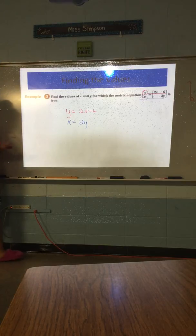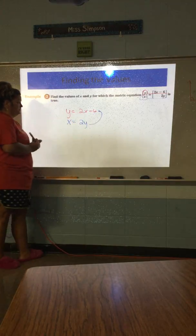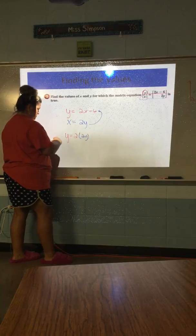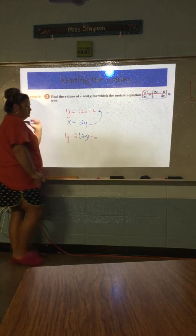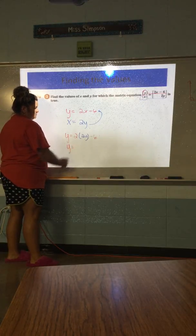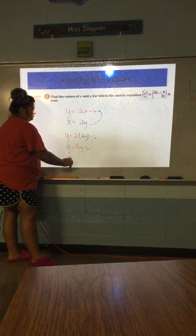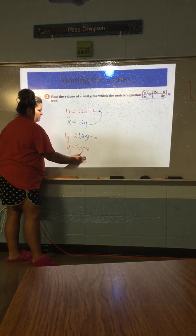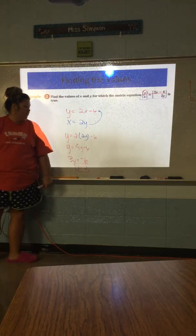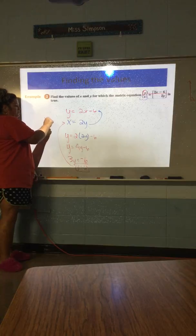Which one would you substitute into the other one? Yeah. I would take this one and plug it in for X. Okay? So Y would equal two times two Y minus six. Then what? 4Y minus six. Good. 4Y minus six. 3Y equals negative six. Sorry, I'm jumping ahead. Y equals negative two. If that's what Y equals, how do I find out what X is? Plug in. So this is what we've been doing.